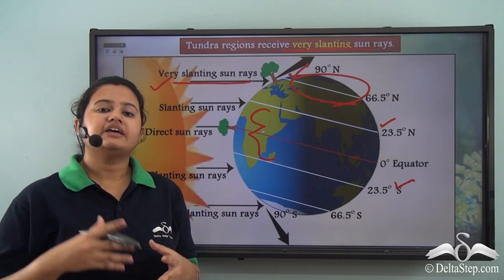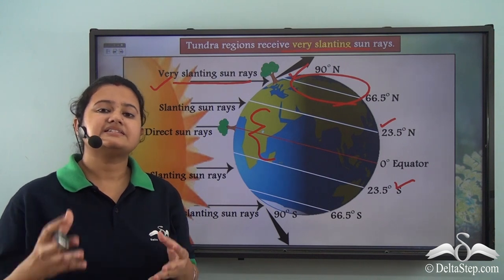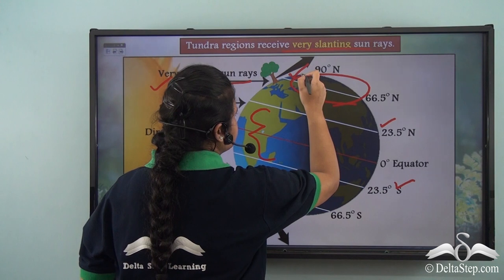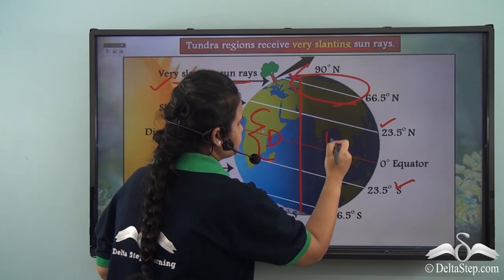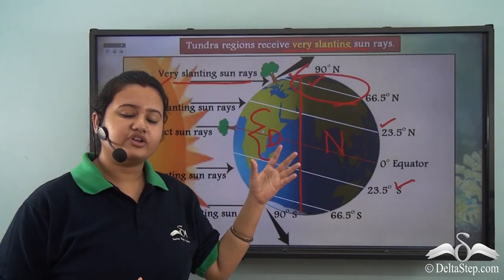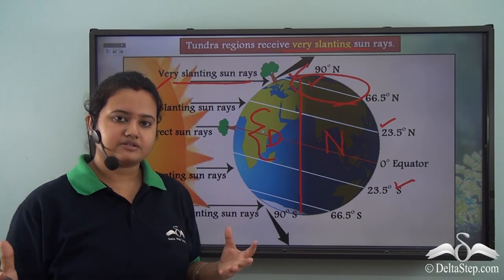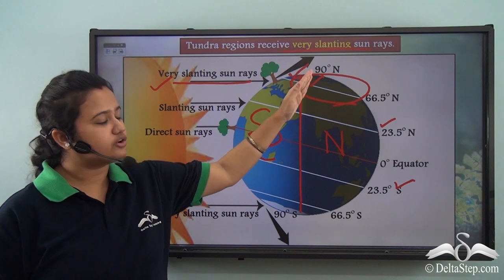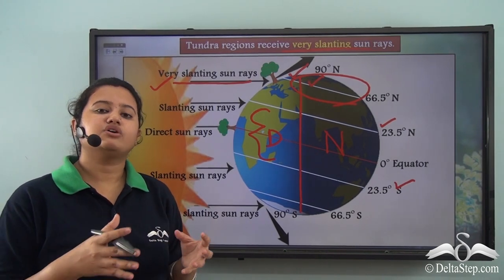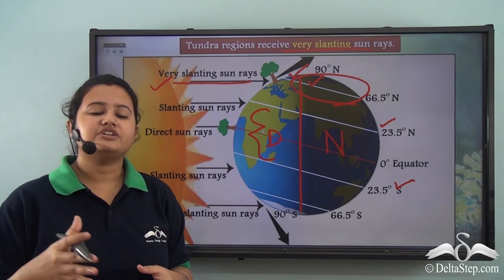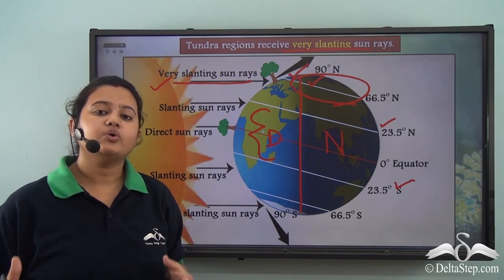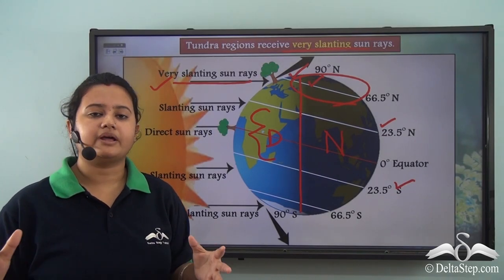Another point to note is that areas in the Tundra region experience six months of day and six months of night. Looking at the circle of illumination — the boundary separating day and night — the region around the North Pole experiences night, and in reality this condition prevails for around six months. This happens due to the tilt of the earth's axis and revolution of the earth around the sun. Although these regions experience six months of day, the sun's rays are of low intensity, and therefore these regions have extremely low temperature throughout the year.